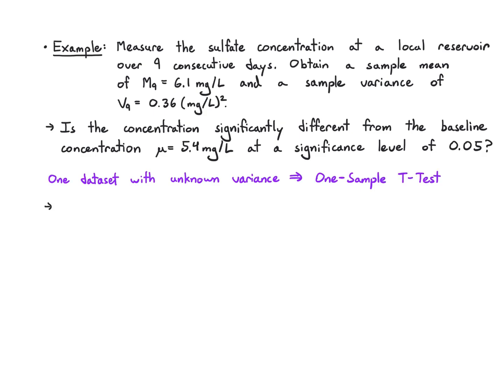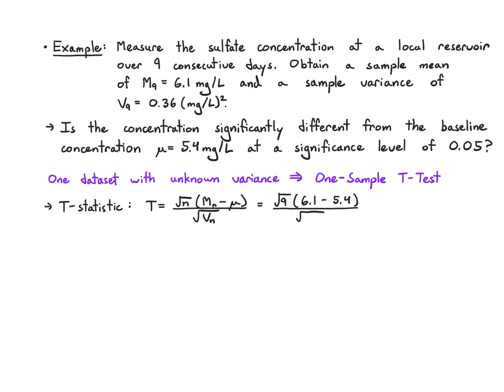It's also worth noting that since there are fewer than 30 samples, the t-test makes sense. If there were more than 30 samples, you could just use a z-test even if the variance were unknown — you'd treat the sample variance like the true variance. In any case, we calculate the t-statistic: root n times the sample mean minus the true mean, divided by the square root of the sample variance. That's root 9 times (6.1 minus 5.4) over root 0.36, giving us 3.5.